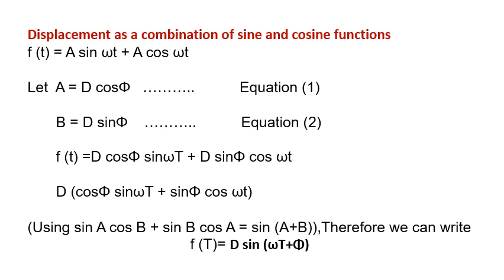Displacement as a combination of sine and cosine functions. Let A denote D cos phi and B denote D sin phi. So the function will become D cos phi sin omega t plus D sin phi cos omega t. By taking D common and using sin A cos B plus sin B cos A equals sin(A + B), you can write the function f(t) will be D sin(omega t + phi).